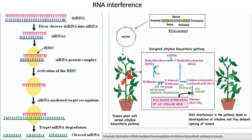After that, the RISC complex protein complex will be activated. Now this antisense siRNA will go and bind to the target mRNA. Later it will degrade it due to cleavage of the mRNA. In this way, it is going to block any pathway.